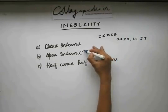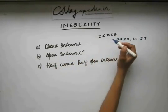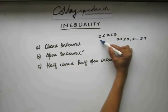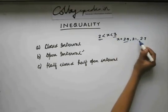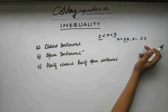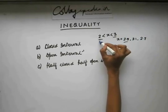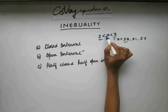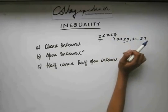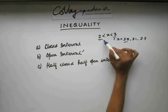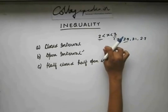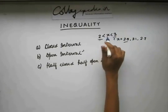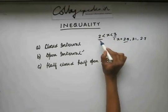First, the open interval. When I say that x lies in the range between 2 and 3, x can take values like 2.5, 2.1, or 2.7, but x cannot be 2 and x cannot be 3, because x is greater than 2 and less than 3. In other words, x can take any values excluding 2 and 3 — the extreme points are excluded. That is what an open interval is; the interval is open at the two extreme points.